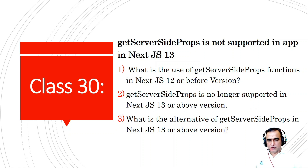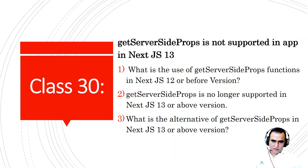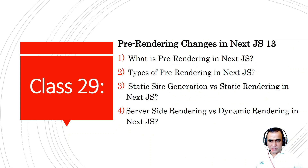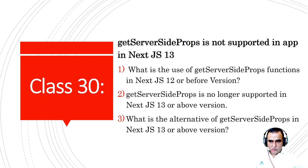The first question is: what is the use of the getServerSideProps function? We use this function for server-side rendering. There are three types of pre-rendering in Next.js: static site generation, server-side rendering, and incremental static regeneration. Server-side rendering is done by the getServerSideProps function, but this function is no longer supported in Next.js 13.